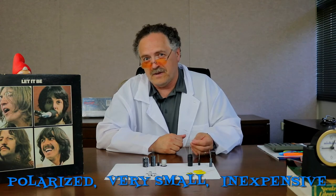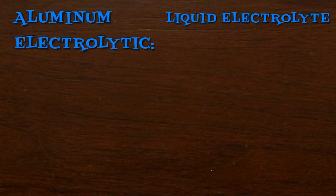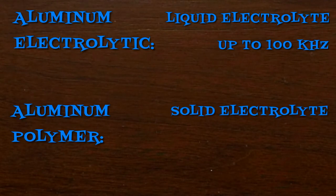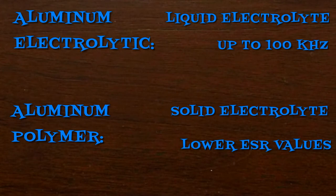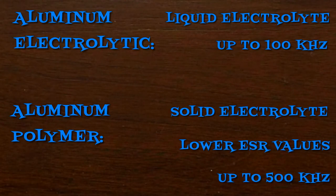But you can always count on electrolytic caps to be polarized, very small, and inexpensive. They also have limited self-healing because every superhero has its limitations. Aluminum electrolytic capacitors have a liquid electrolyte and can be used up to 100 kilohertz, while aluminum polymer capacitors have a solid electrolyte and ESR values that are much lower than electrolytic capacitors. They can also be used up to frequencies of 500 kilohertz.